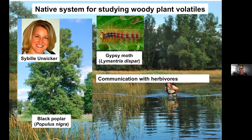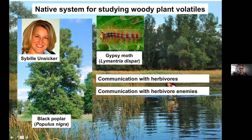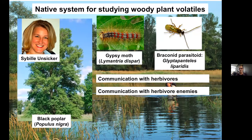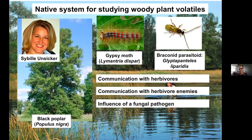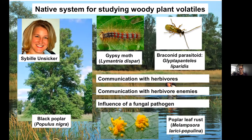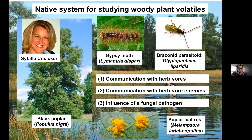Let's start with communication with herbivores. This story begins with one of Sibylla's graduate students, Andrea McCormick, now in New Zealand, who was interested in how gypsy moth caterpillars perceive the poplar tree through volatiles. She did general experiments showing that larvae will choose plant volatiles — they chose leaves of poplar over clean air, and also chose herbivore-damaged leaves over undamaged leaves.